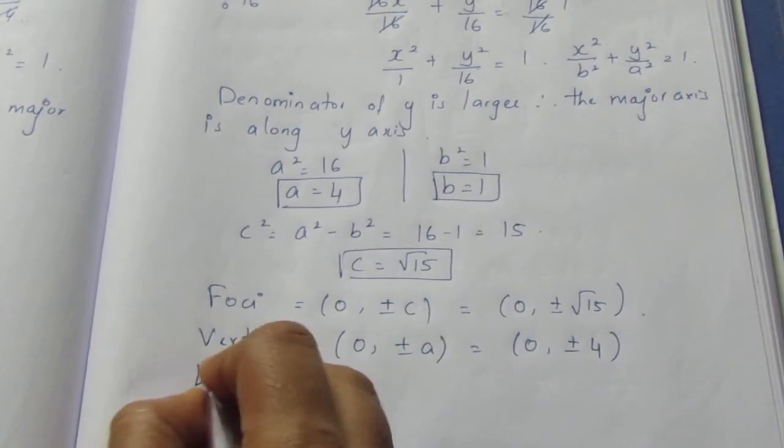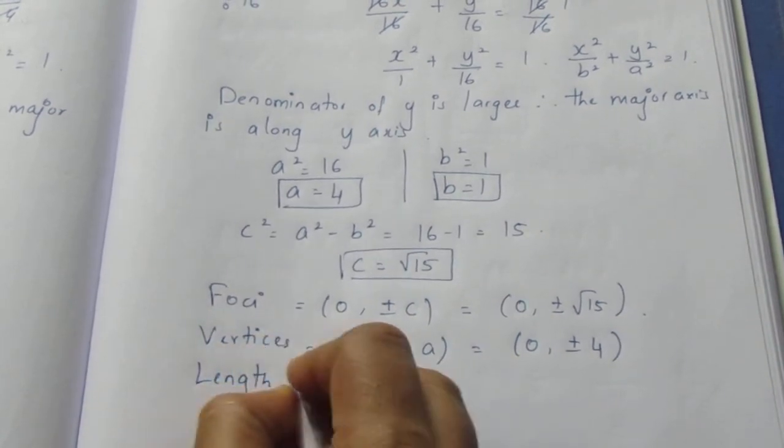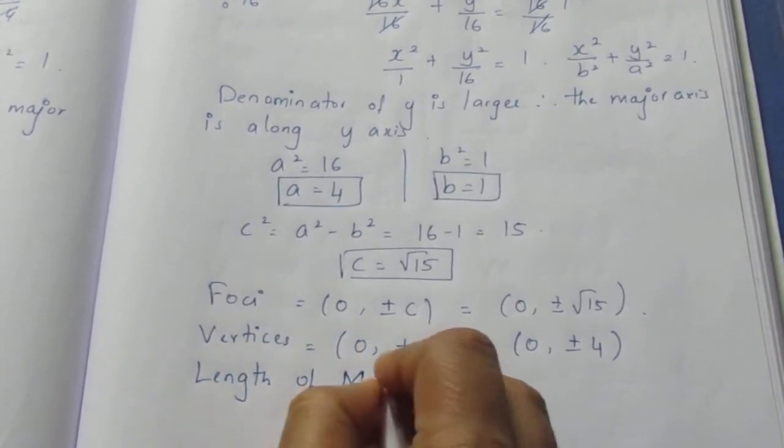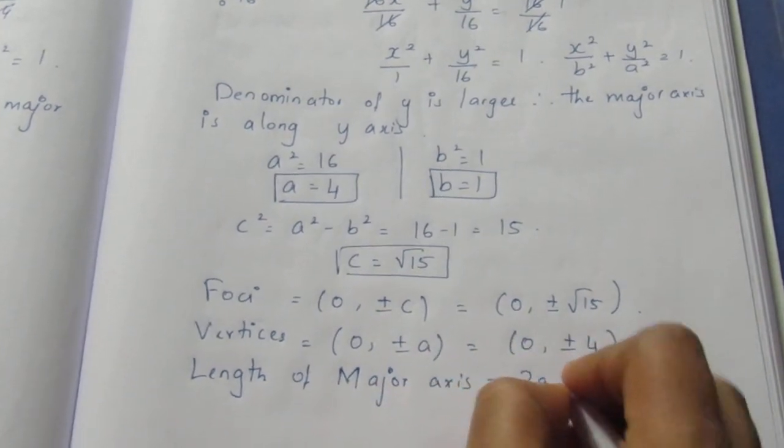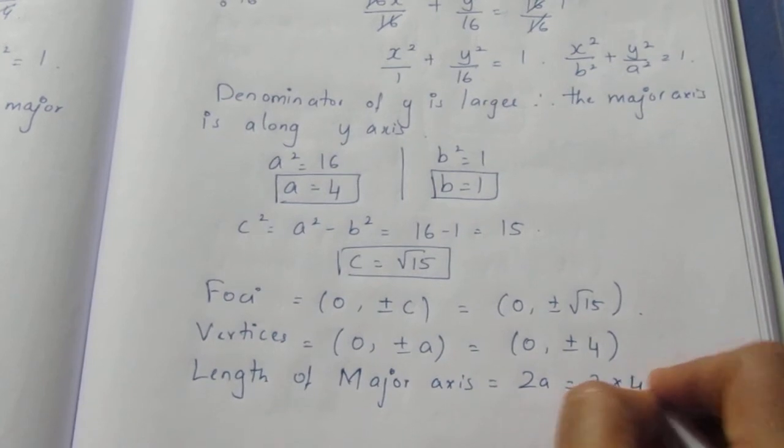Next length of the major axis which is 2a. So 2 × 4 which is 8.